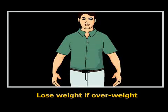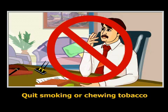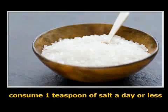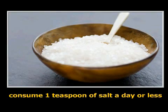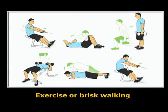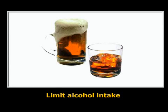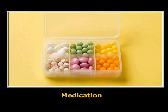Prevent or control hypertension by adopting a healthy lifestyle: lose weight if overweight, quit smoking or chewing tobacco, consume 1 teaspoon of salt a day or less, do exercise or brisk walking, limit alcohol intake, and consult your physician for medication.